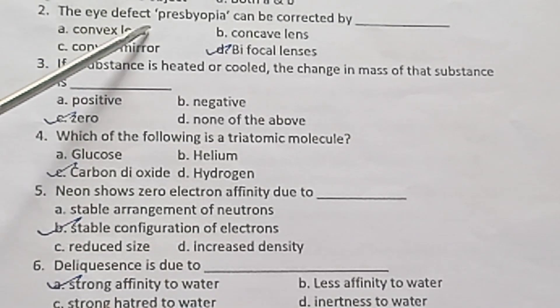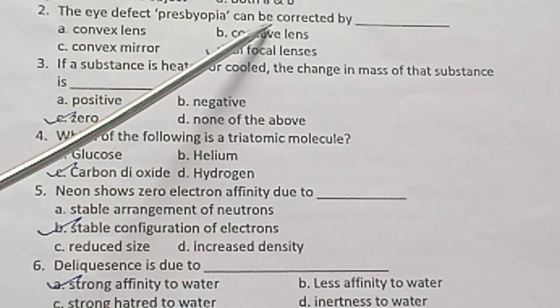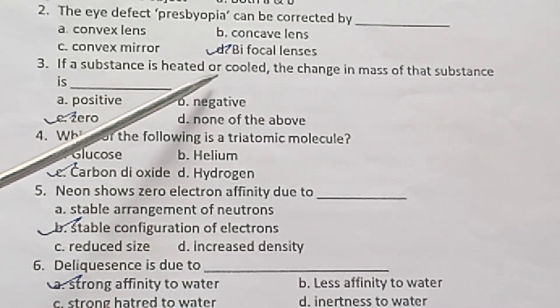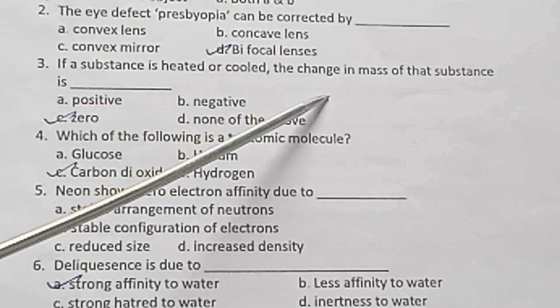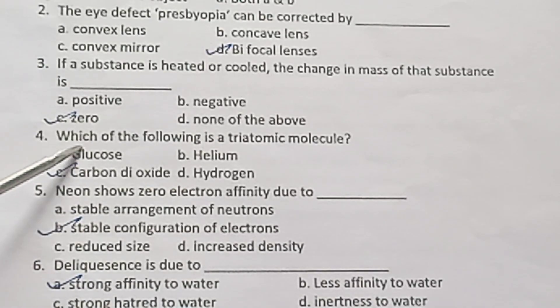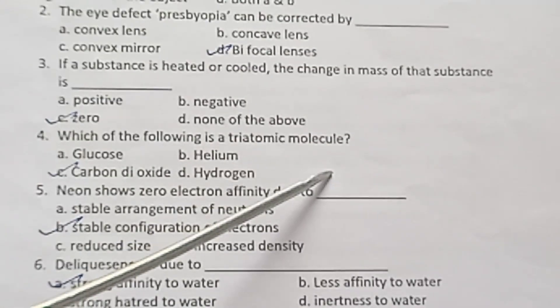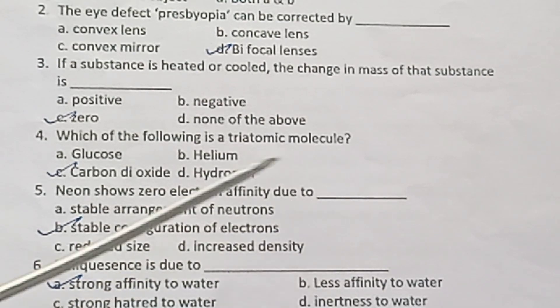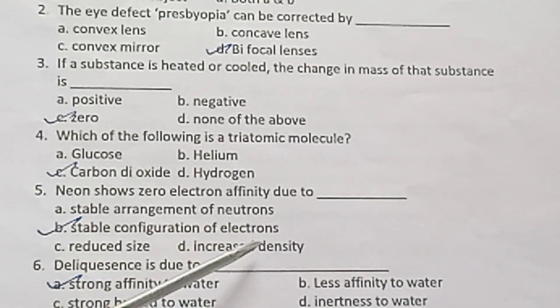The eye defect presbyopia can be corrected by bifocal lenses. If a substance is heated or cooled, the change in mass of the substance is zero. Which of the following is a triatomic molecule? Carbon dioxide, CO2. Neon shows zero electron affinity due to stable configuration of electrons.